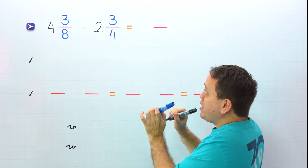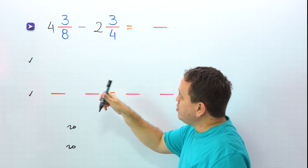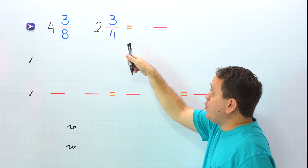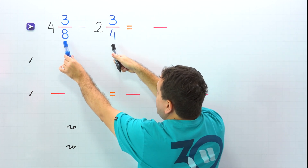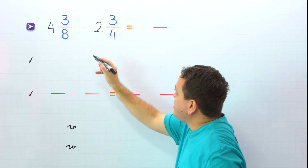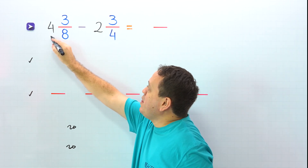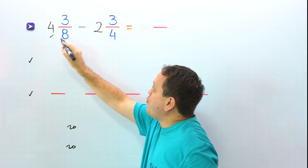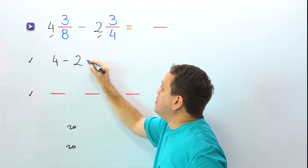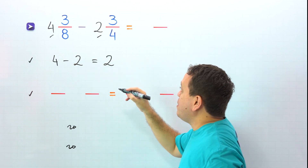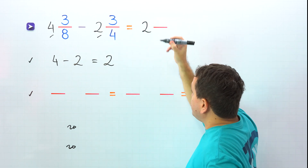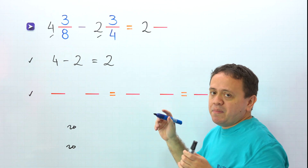Are you ready for this special case? In this example, we need to subtract 4 and 3 eighths minus 2 and 3 fourths. These mixed numbers have different denominators. To find the difference, usually we'll start by subtracting the whole numbers. The whole numbers are 4 and 2. We put 4 minus 2, and 4 minus 2 gives us 2. We put 2 in the answer — we have the difference of the whole numbers.